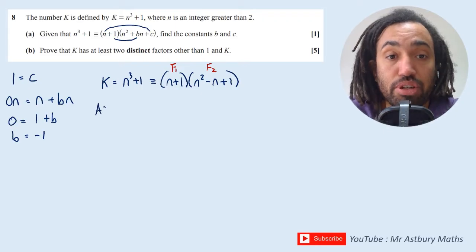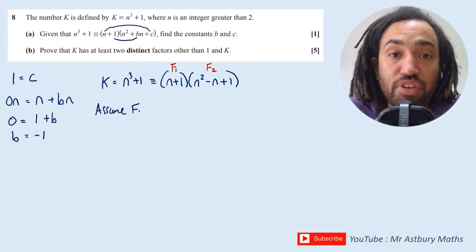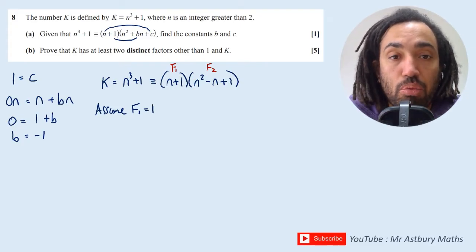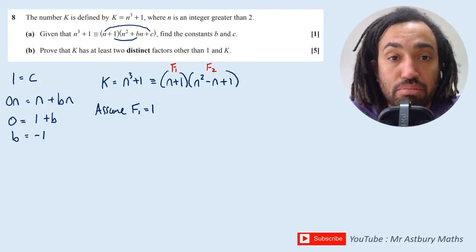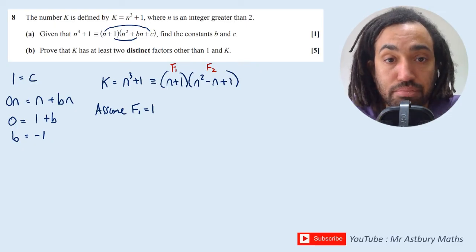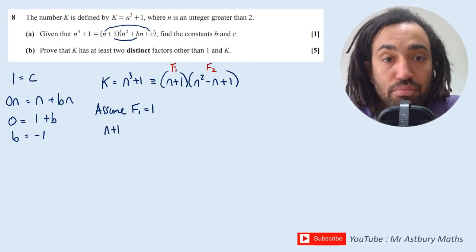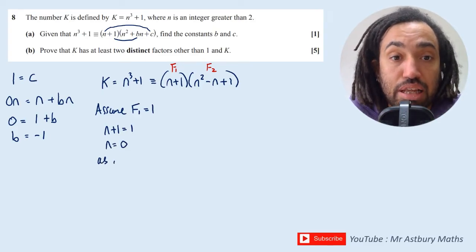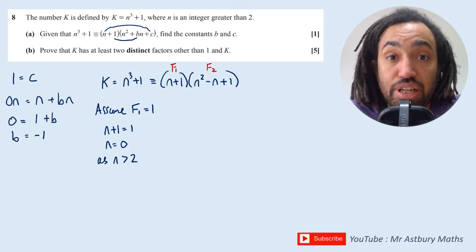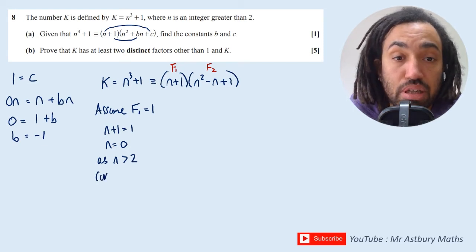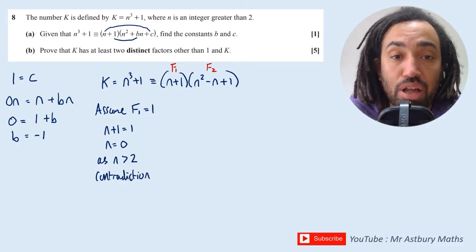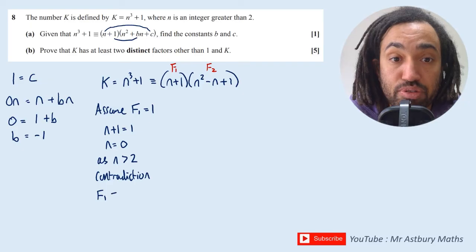So the first thing I'm going to do is assume that the first factor F₁ = 1. Let's see what happens. Well when F₁ = 1, I get that n + 1 must equal 1, and therefore n = 0. As we know in the question n is greater than 2, this is a contradiction.